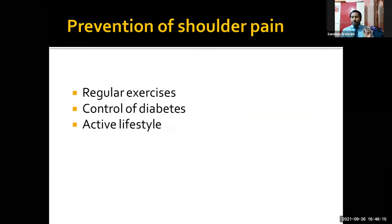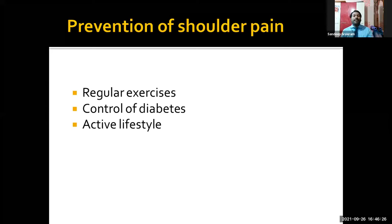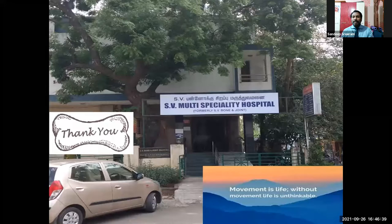Prevention of shoulder pain: regular exercises, control of diabetes if you are diabetic, and an active lifestyle can prevent 95% of shoulder conditions. If you consistently do regular exercises, you will probably not have any shoulder pain in your lifetime. Thank you very much for your patient listening — life is movement; without movement, life is unthinkable. Thank you very much.